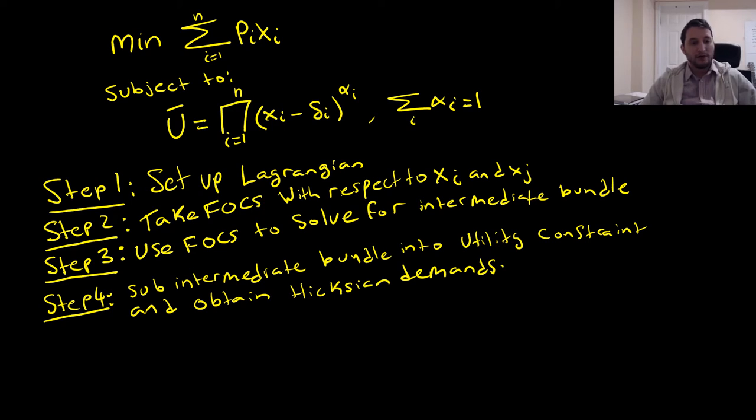Like usual, we're going to follow these four steps. We're going to set up a Lagrangian. We're going to take our first order conditions with respect to XI and XJ. We're then going to use our first order conditions to solve for our intermediate bundle, then sub in our intermediate bundle into our utility constraint and obtain our Hicksian demands.